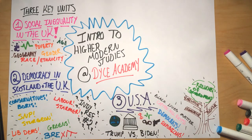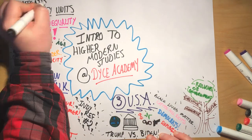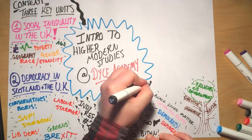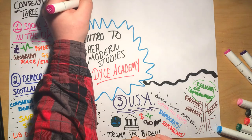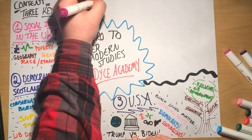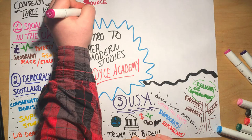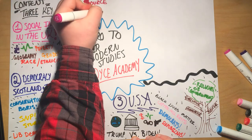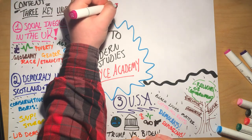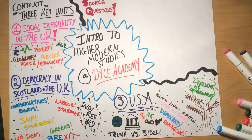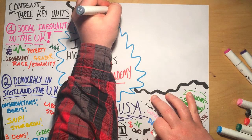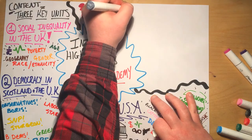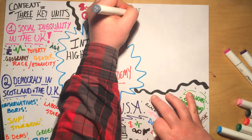So together that gives us our three units at higher modern studies. In addition to those three units, we also have a section of source questions, which builds on what we cover in National 5 Modern Studies. There are three source questions — we've got an objectivity question, where you look at a statement and evidence that supports and opposes it before coming to a final overall conclusion as to how accurate that statement is.